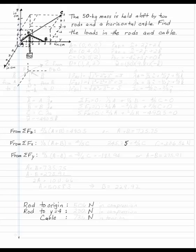The 50 kilogram mass is held aloft by two rods and a horizontal cable. Find the loads in the rods and the cable.